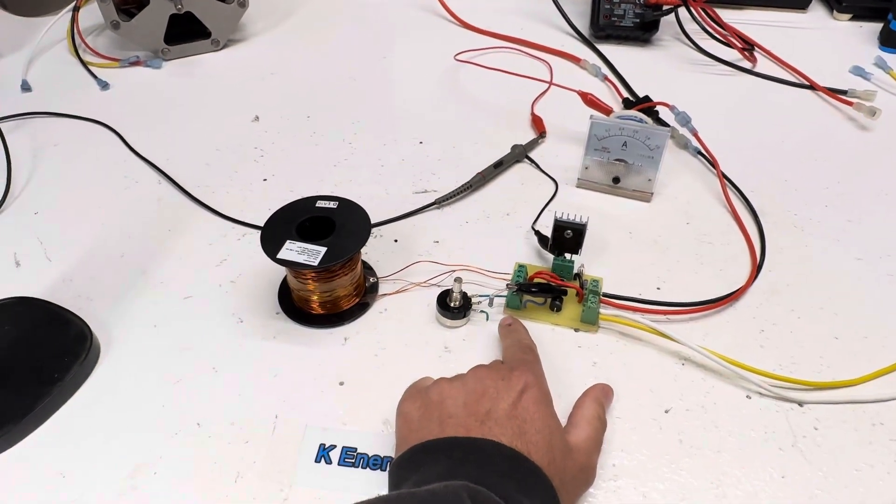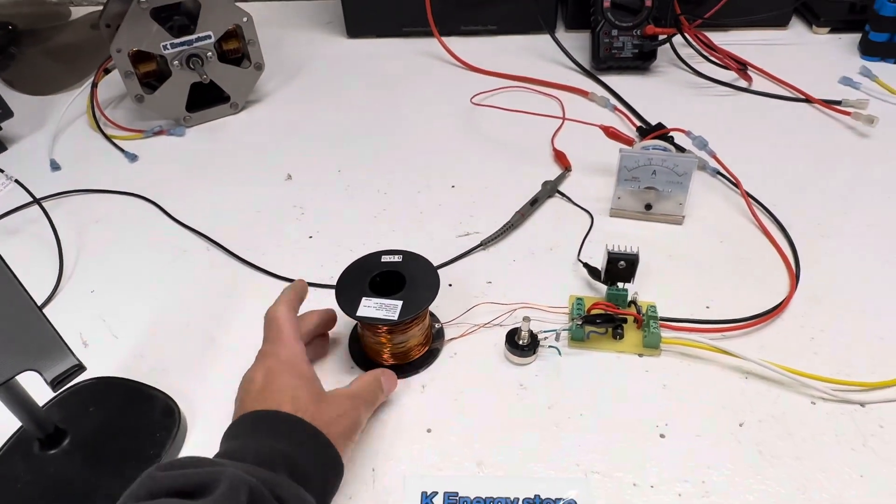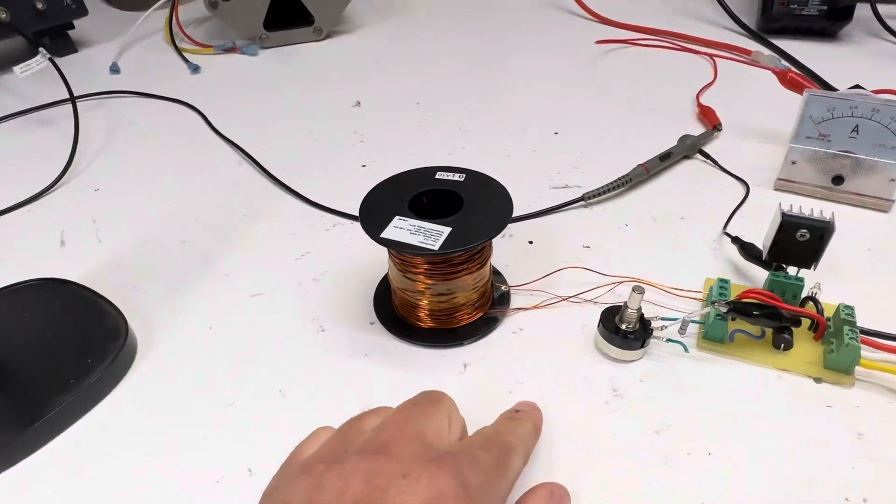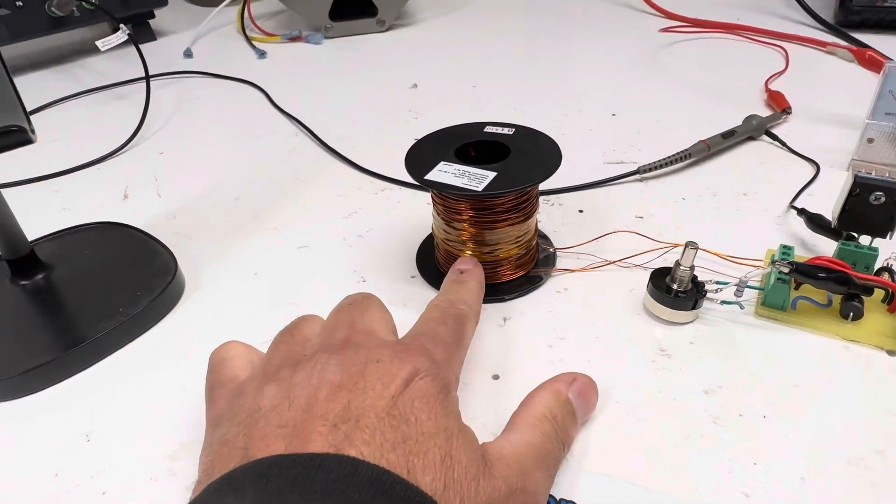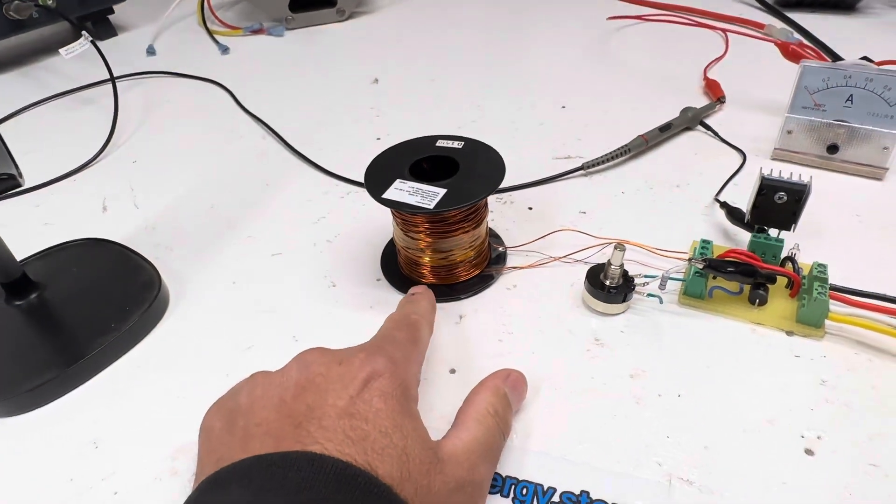This coil I just wound is 18 gauge and 26 gauge wire, and it's 527 turns, so quite a bit on there.